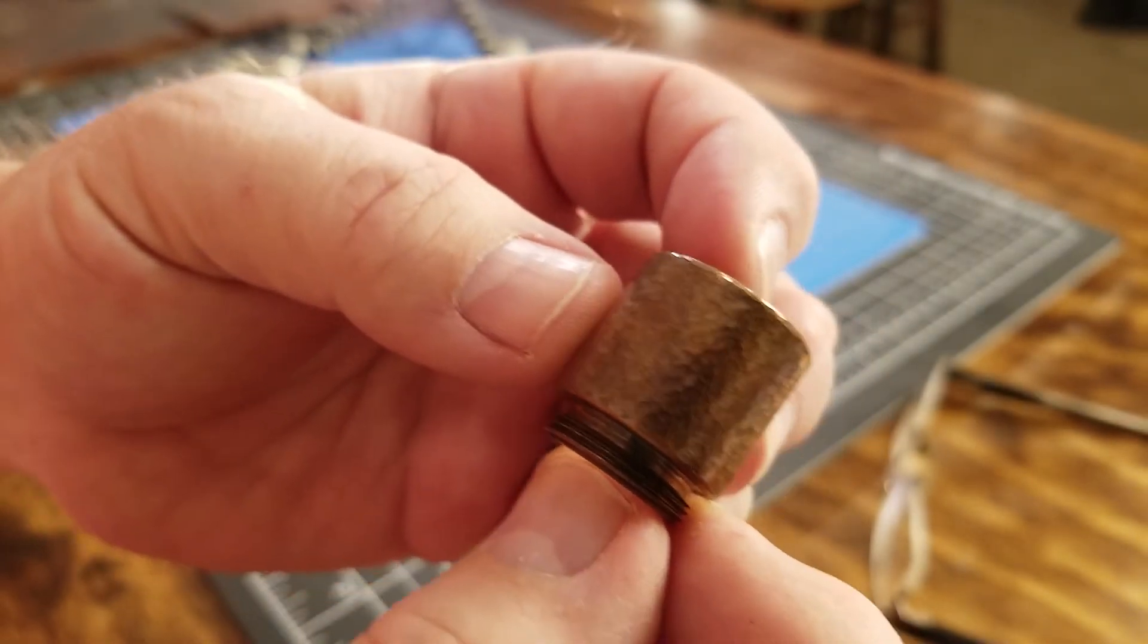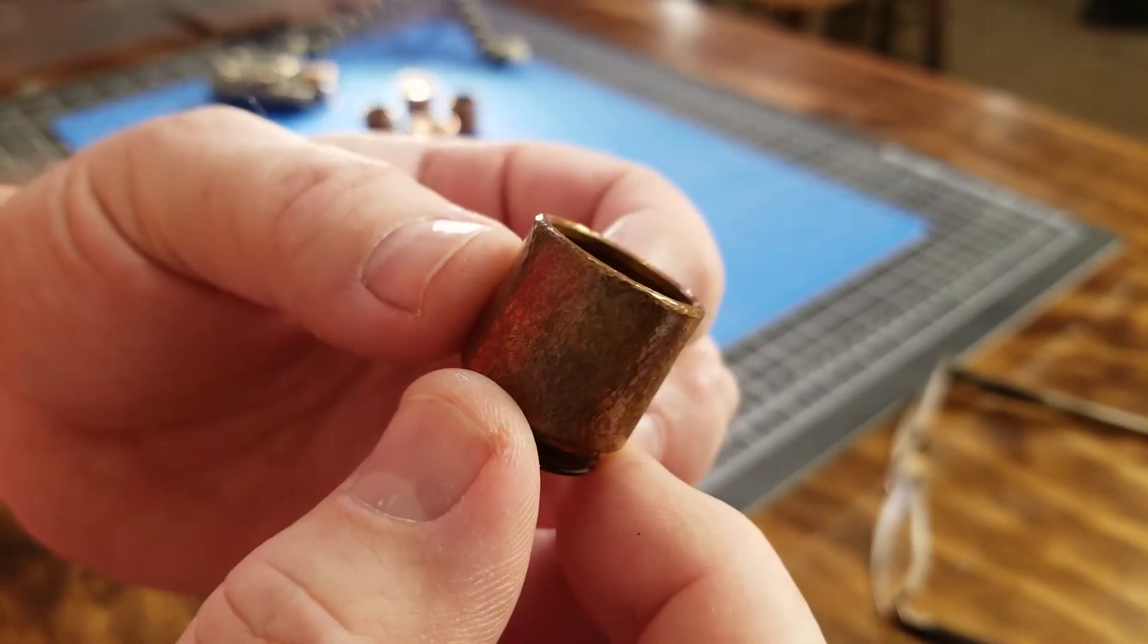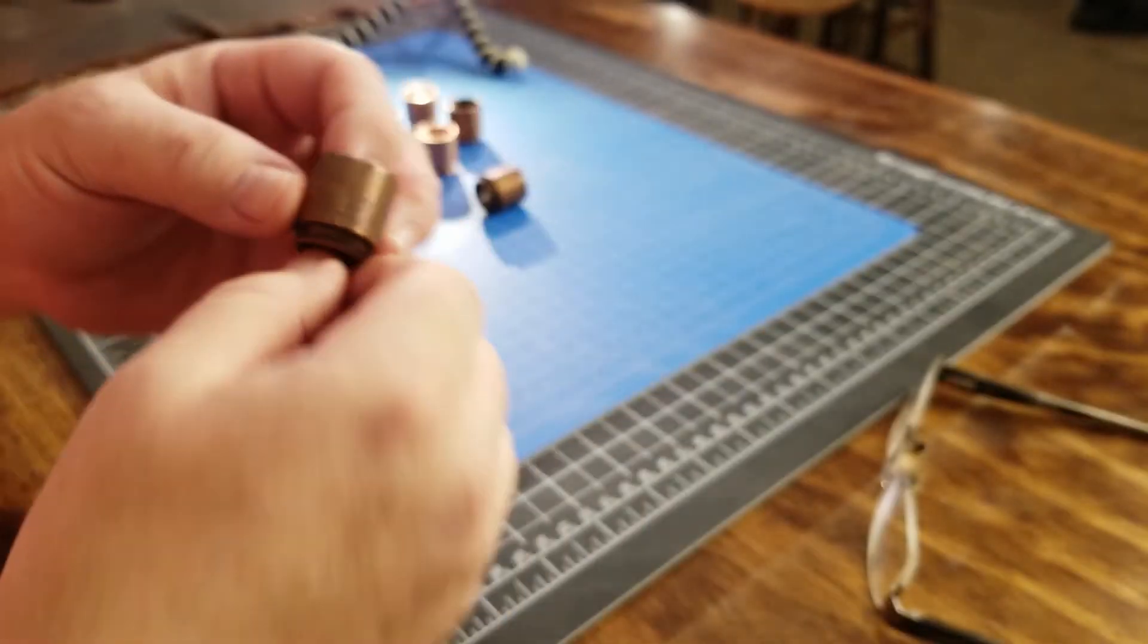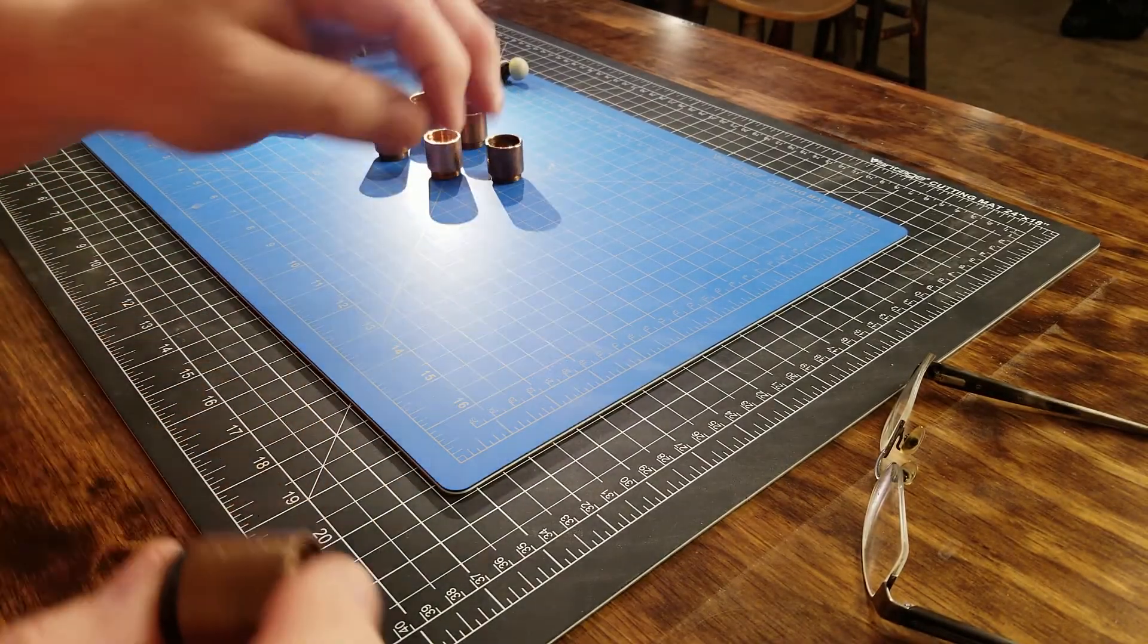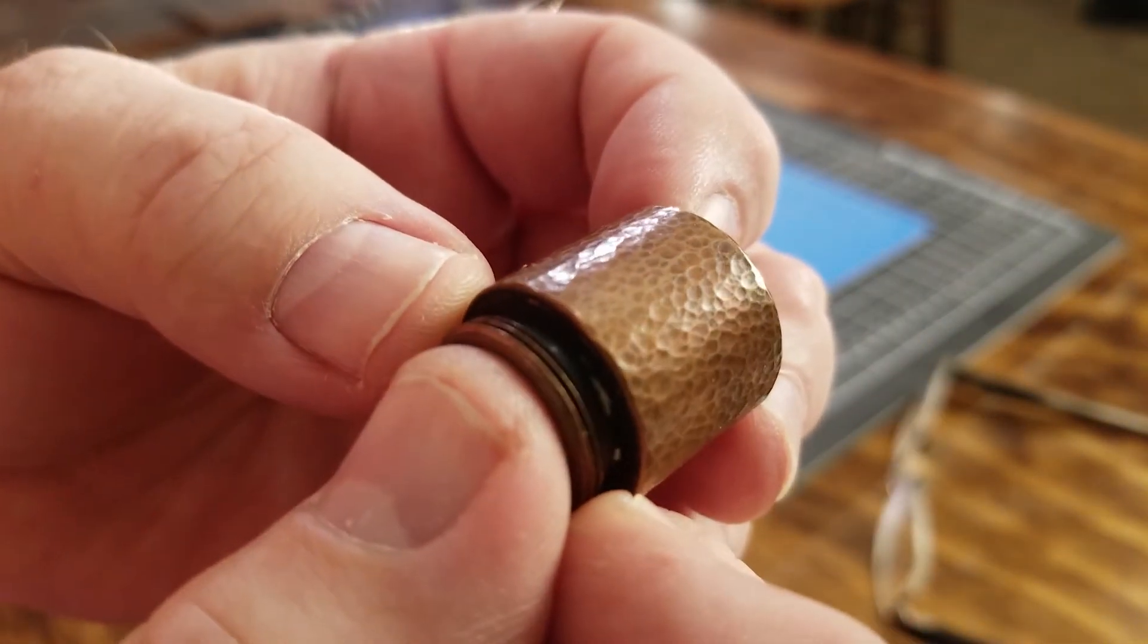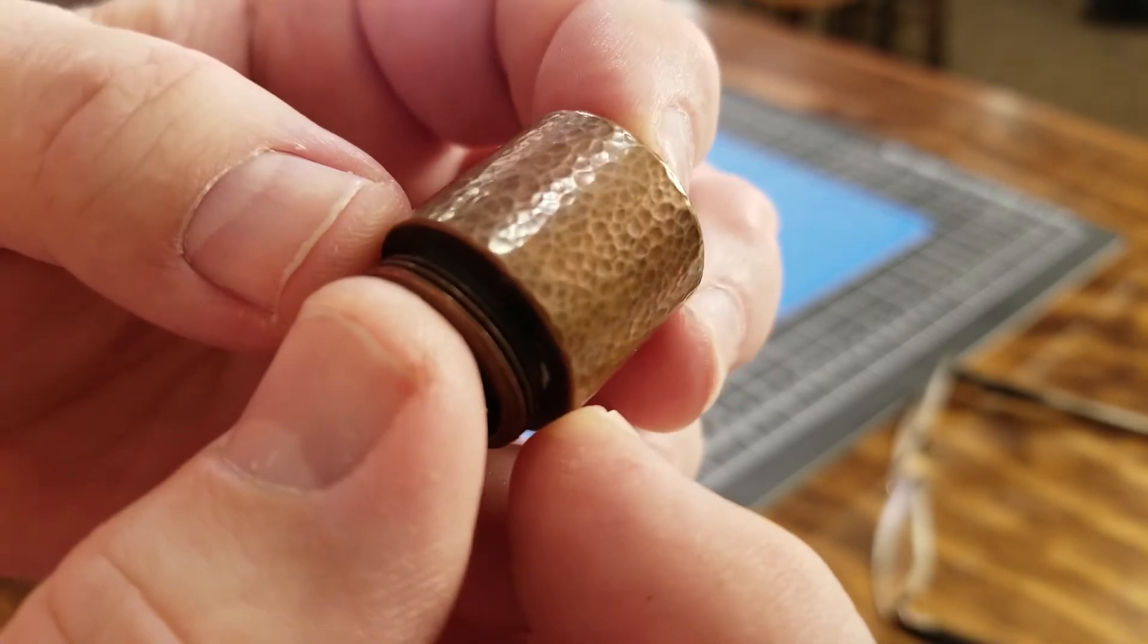Here it is with the patina. Here it is stonewashed. It rounds over the sharper edges a little bit.